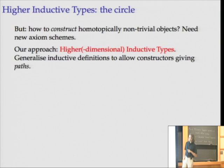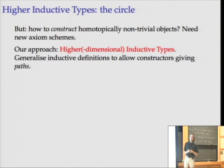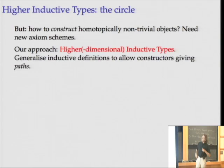We generalize inductive definitions to allow constructors giving paths. In normal inductive types like the natural numbers, each constructor gives you a point of the space — zero is a point, and successor takes an old point and gives a new point. But if we generalize and allow constructors to also give paths, you can get some interesting new things.